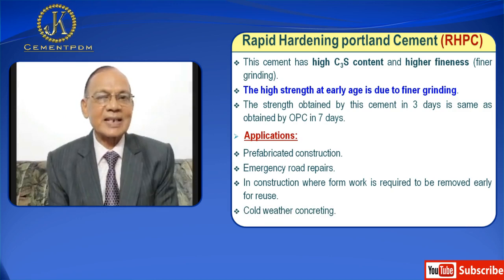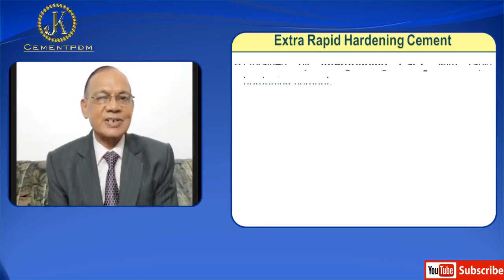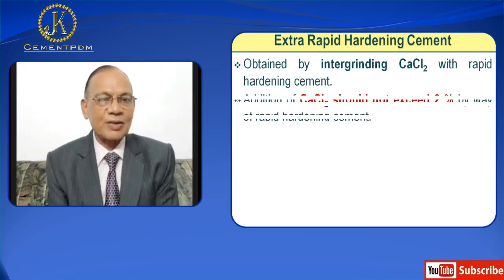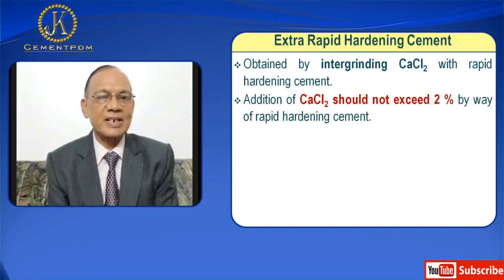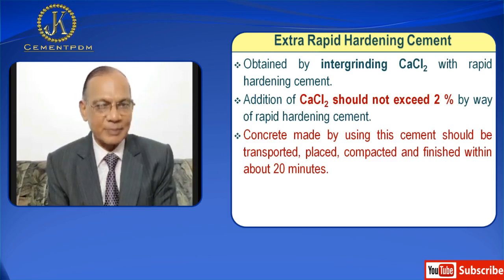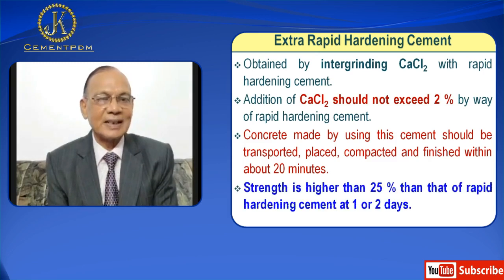Next is Extra Rapid Hardening Cement. It is obtained by intergrinding calcium chloride with rapid hardening cement. Addition of calcium chloride should not exceed 2% by weight of rapid hardening cement. Concrete made using this cement should be transported, placed, compacted, and finished within about 20 minutes. Strength is higher by about 25% than that of rapid hardening cement at 1 or 2 days.